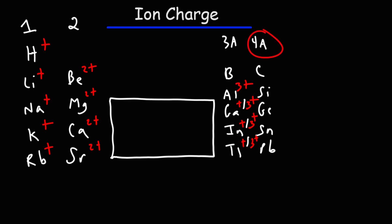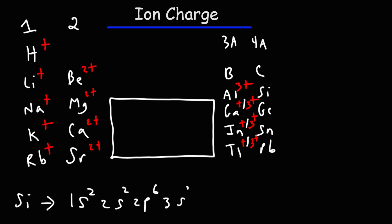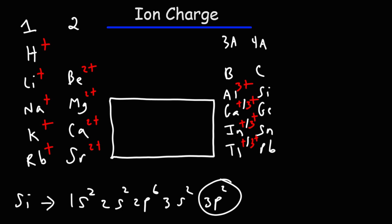Group 4A elements like carbon, silicon, germanium, tin, and lead have four valence electrons and can form a 4+ charge. But some of them also have a 2+ charge. Silicon's electron configuration is 1s2, 2s2, 2p6, 3s2, 3p2. If silicon gives up all four valence electrons, it has a 4+ charge; if it gives up only two, it has a 2+ charge. So silicon, germanium, tin, and lead can have either the +2 or +4 oxidation state.